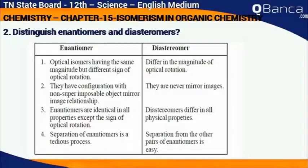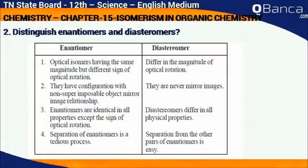Enantiomers have a configuration with a non-superimposable object-mirror image relationship. Diastereomers are never mirror images. Enantiomers are identical in all properties except the sign of optical rotation. Diastereomers differ in all physical properties. Separation of enantiomers is a tedious process, whereas separation of diastereomers from other pairs is easy.